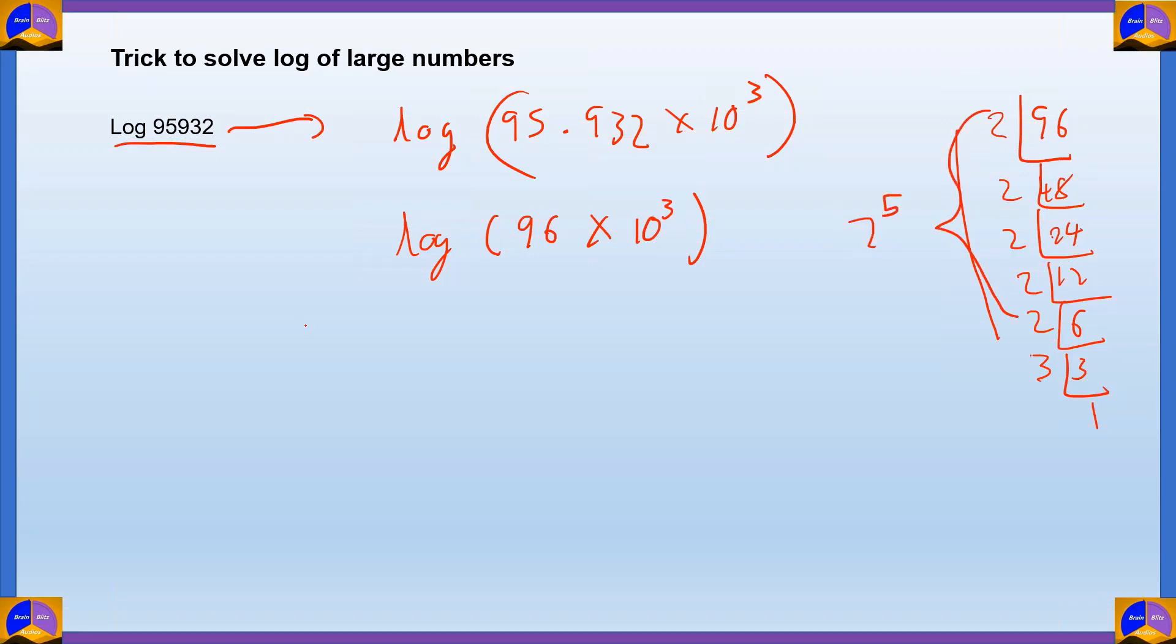So, 96 into 10 cubed will be log 2 raised to 5 into 3 into 10 cubed. Let's write it down. It becomes log 2 raised to 5 plus log 3 plus log 10 cubed. Due to the earlier rule, log A times B is equal to log A plus log B. And log 2 raised to 5, that is log A raised to B, becomes B log A. So, 5 log 2 plus log 3 plus 3 log 10.